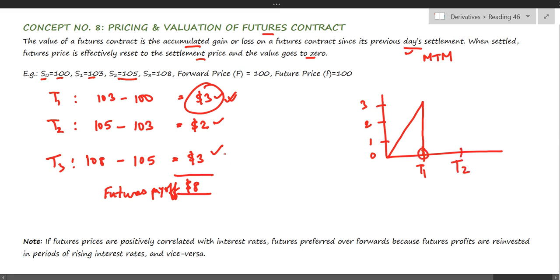This is the profit, and once this profit is settled, the value of the future is again reduced to zero. Similarly, on T3, the value of the futures contract rises to $3, and once this amount is settled, the value becomes zero again.